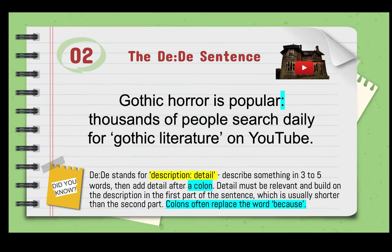The second kind of sentence is the DD sentence, which stands for description-detail. The sentence works in two halves: in the first half you describe something in three to five words, then you add detail after a colon. The type of punctuation you use here is a colon, as highlighted in turquoise in the example.